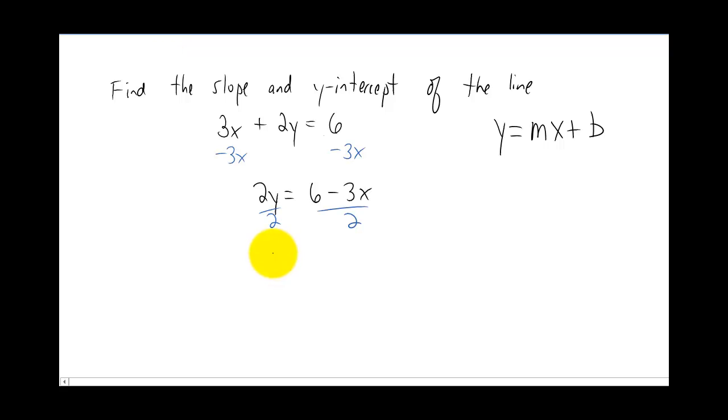So on the left now, we have y by itself, which was our goal. On the right, what we can do is we can split up this numerator into two pieces. In other words, we can divide six by two and get three, and divide three by two and just get the fraction three halves. Don't forget to leave your x in there.